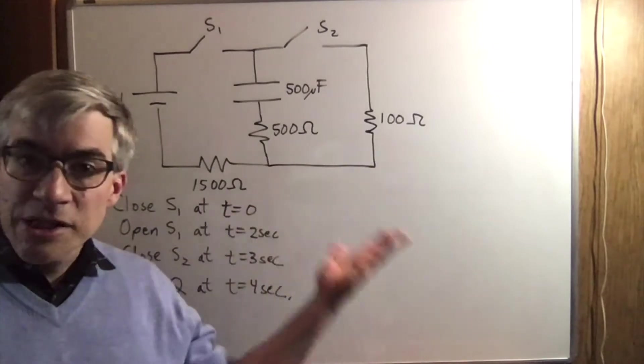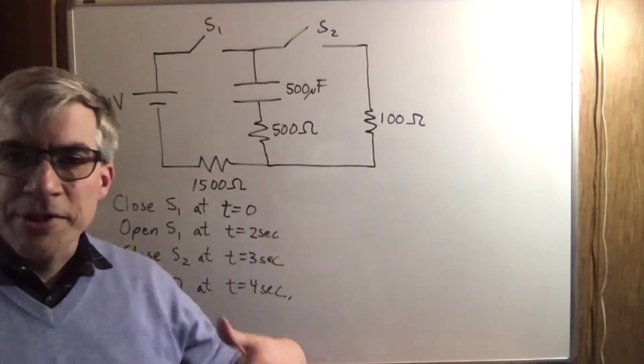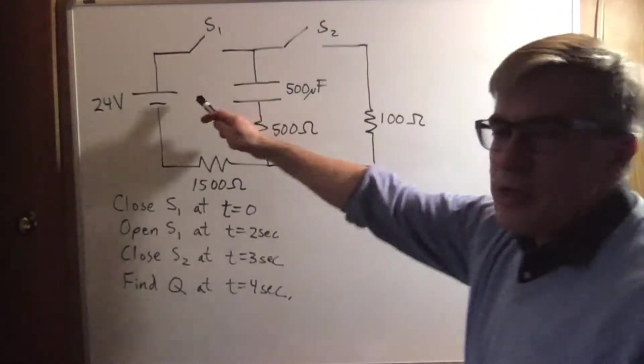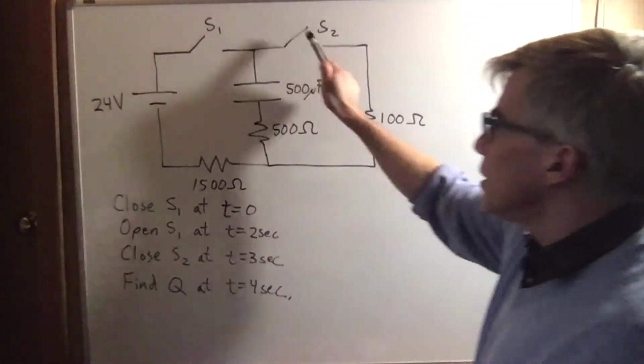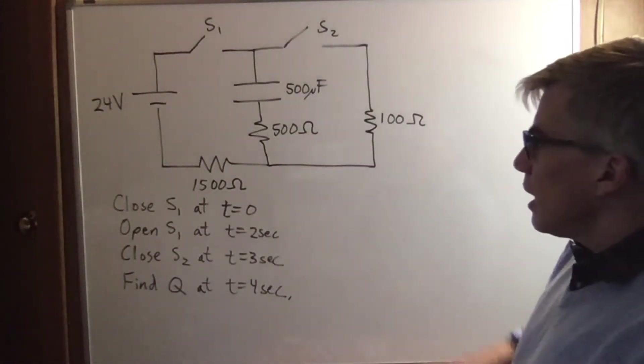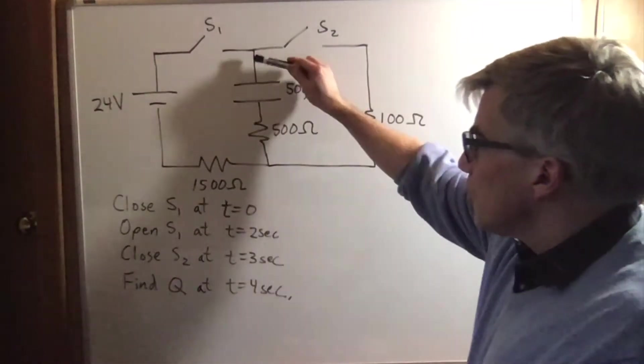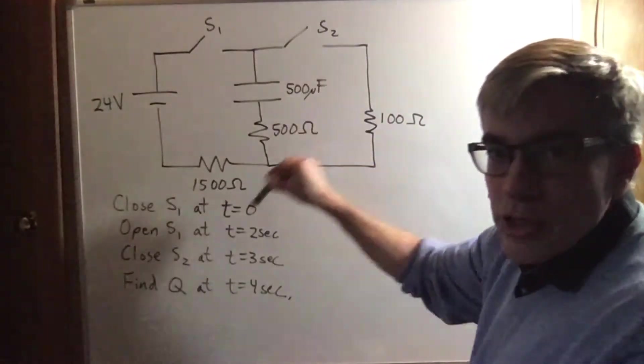Suppose we have an RC circuit. Let's figure out what happens as it charges and discharges. So we start with a 24-volt battery, a switch one and a switch two. At time zero, we're going to close switch one, which causes the capacitor to start getting charged.